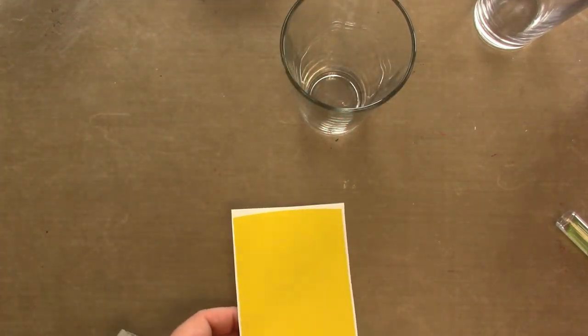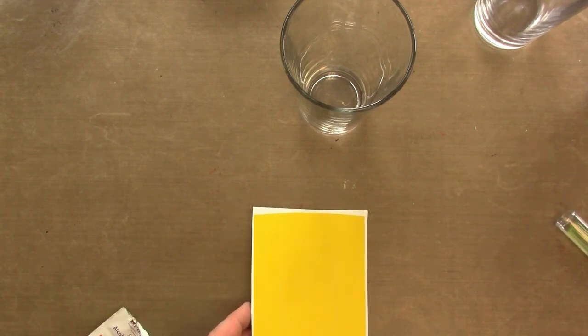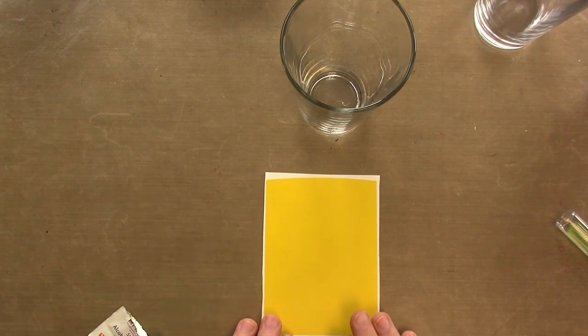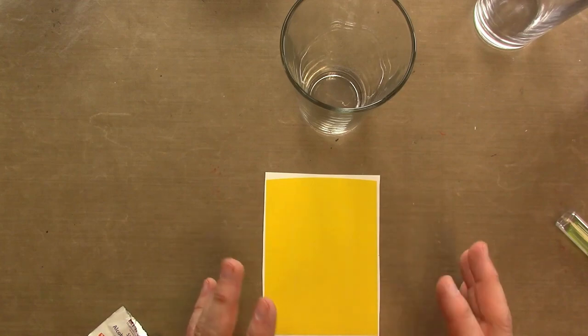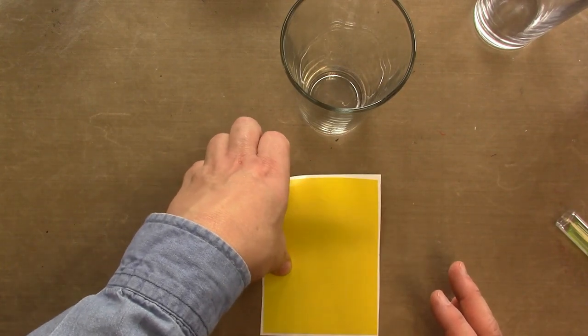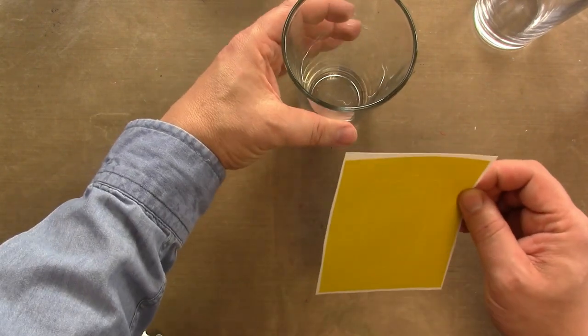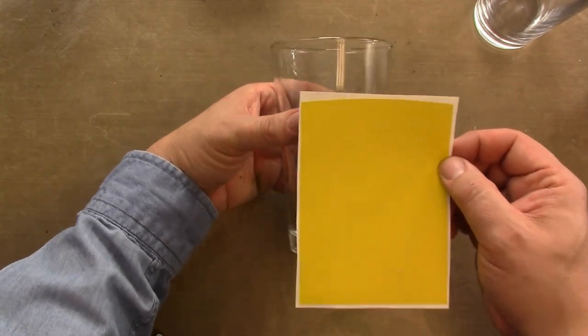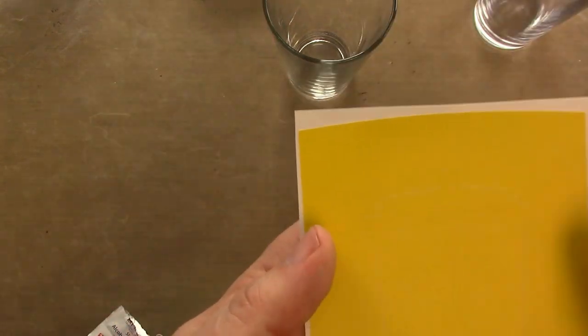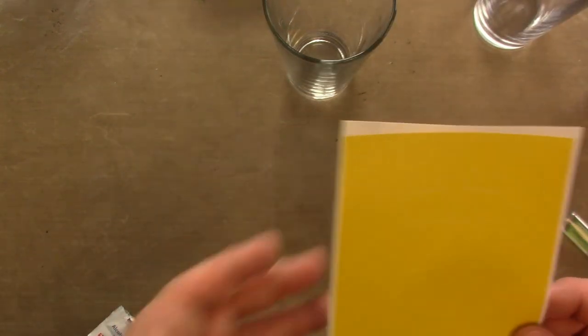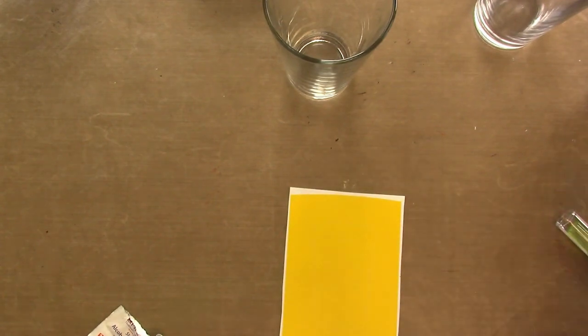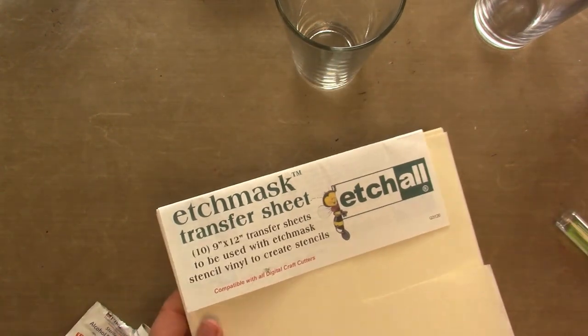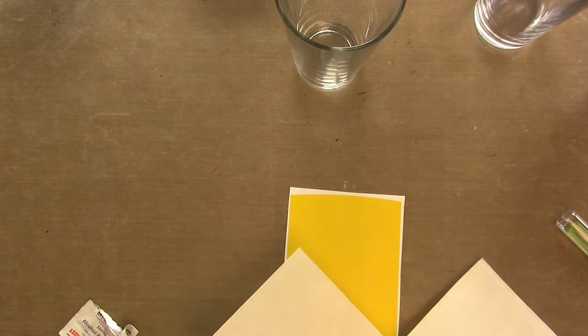Now we have to transfer this stencil onto the glass. Some folks would weed it right here on the backing. Weeding means taking away the parts that we don't need, that we want to expose that glass to the cream. Another technique is to actually weed it right on the surface of the glass that you're etching. I'm going to do that in this case because this particular piece has some very tiny dots. I'm going to get a piece of transfer sheet and cut it to fit this particular stencil.